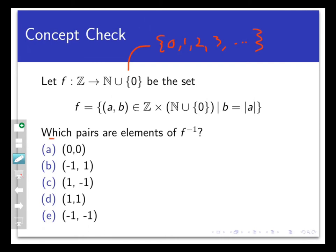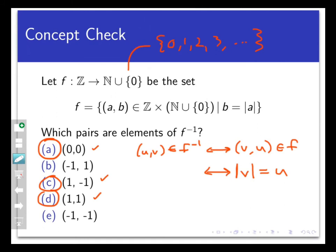So the answers here are A, C, and D. Now the way to know whether a pair, say (u,v) belongs to F inverse is to ask: is (v,u) the reverse order in the original function F? If so, then (u,v) belongs to F inverse. Now what this means here in our context is that (u,v) belongs to F inverse if and only if (v,u) belongs to F. But that happens if and only if the absolute value of v is equal to u. So for F inverse, we're looking for pairs where the first coordinate is the absolute value of the second coordinate. That's exactly the opposite of F. And that happens only in choices A, C, and D. Choice B is a pair that belongs to F because the second coordinate is the absolute value of the first one. But it does not belong to F inverse because the vice versa is not true. And we can rule out E without doing any math at all because the pair is not even an element of Z cross N union 0 due to the fact that the second coordinate is negative.